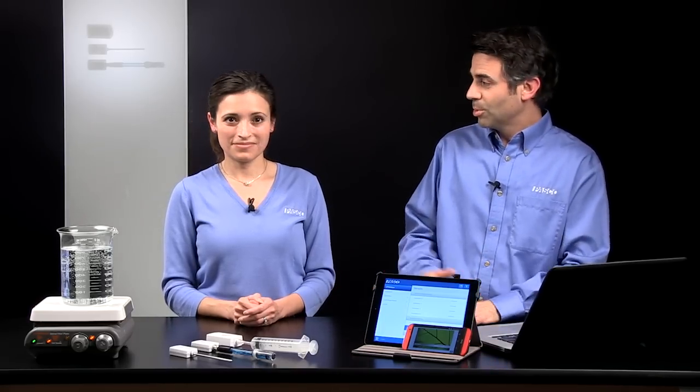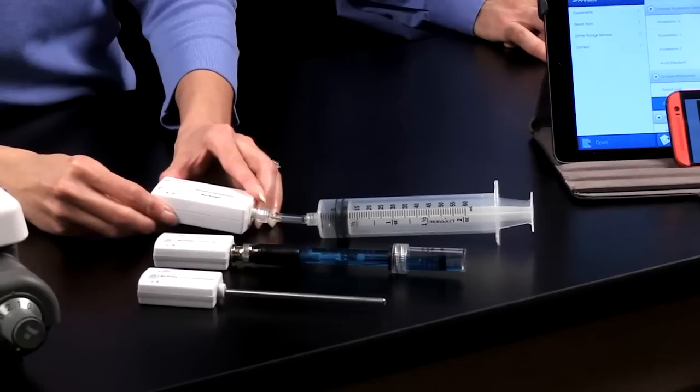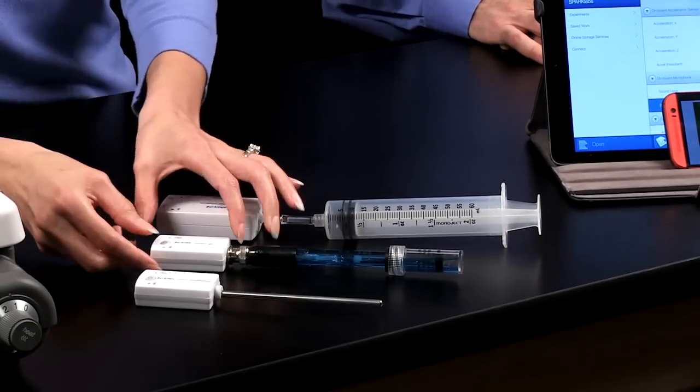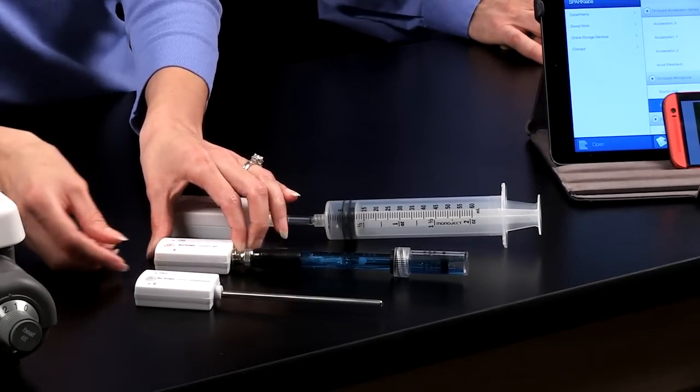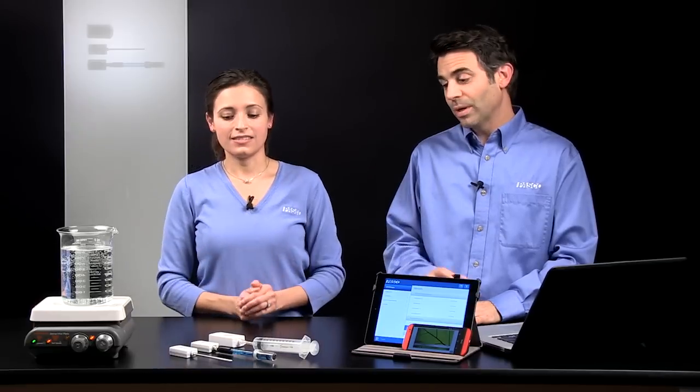So to connect, the first thing we need to do is turn them on. So I'm just going to hold the power button down for a second until the red Bluetooth light turns on. And that red light means that it's broadcasting a Bluetooth signal.